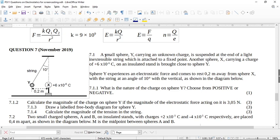So here we've got a small sphere Y carrying an unknown charge suspended at the end of a light inextensible string which is attached to a fixed point. Another sphere X, carrying a charge of plus 6 times 10 to the negative 6 coulombs on an insulated stand is brought close to sphere Y. Sphere Y experiences an electrostatic force and comes to rest 0.2 meters away from sphere X, with a string at an angle of 10 degrees with the vertical as shown in the diagram.